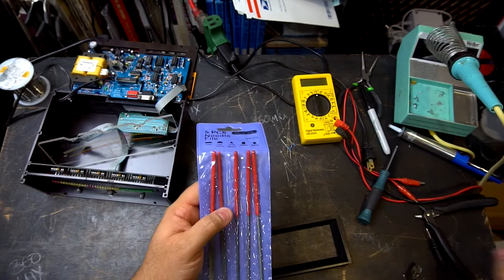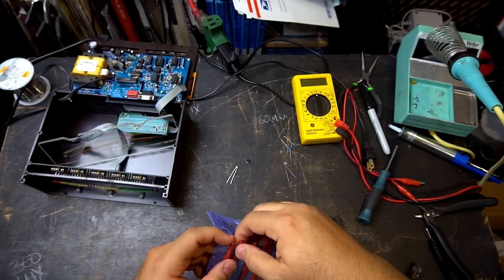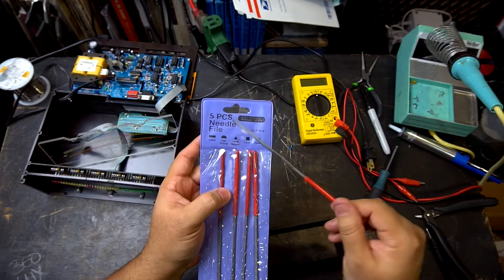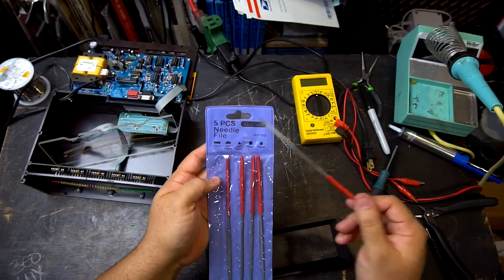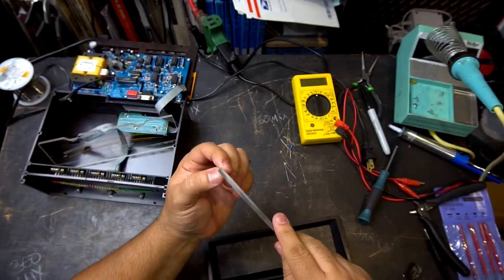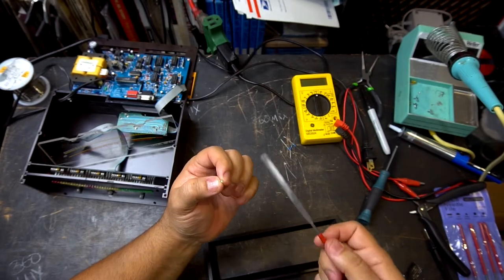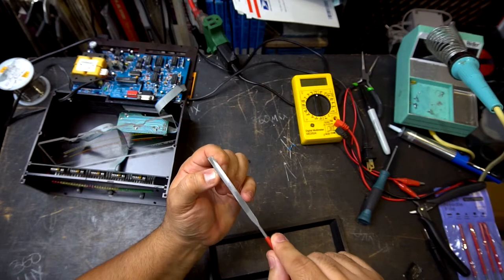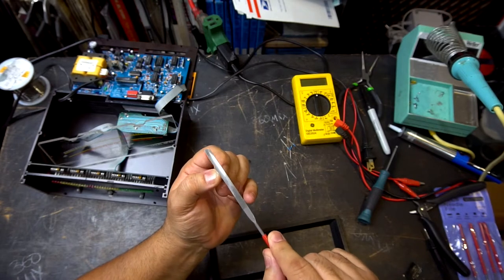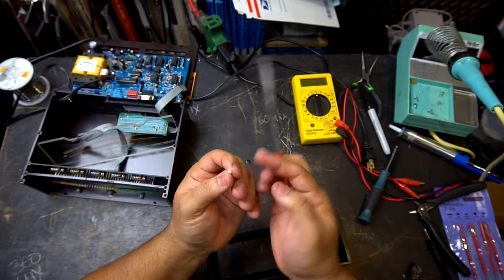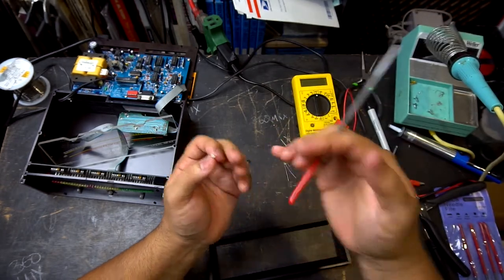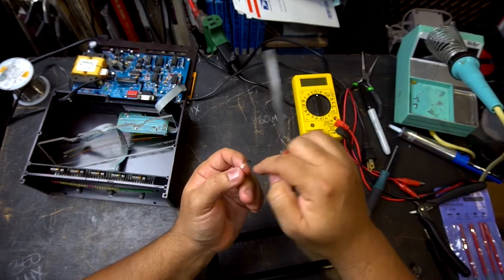So I bought these files—five files, all different sizes—and they have this flat one which I'm going to use. All we're going to do is grab the LED and file the top part of it. We're going to buff it a couple of times. The plastic is going to come off—as you can see that white stuff that's coming out, that's the actual part of the plastic. Now the light is going to reflect instead of going up—it's going to reflect down, which is going to disperse the light down.